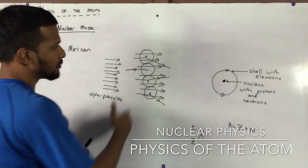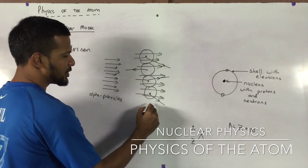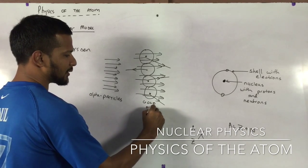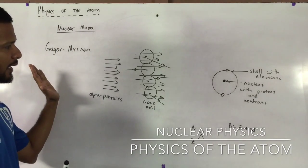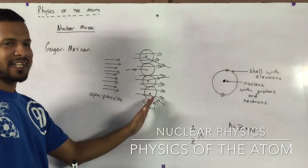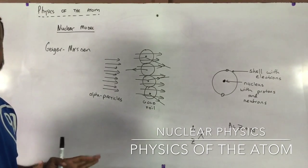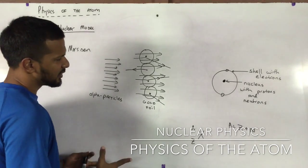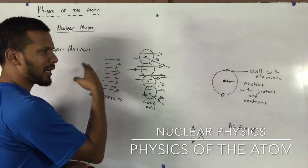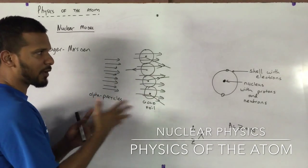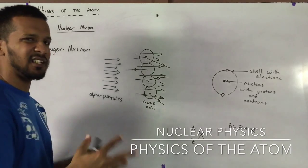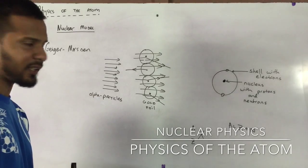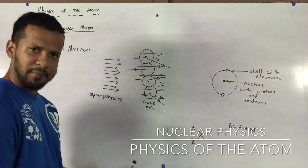What they did is they took gold foil and they shot the gold foil with alpha particles. So alpha particles were incident on a thin sheet of gold foil. And there were three main observations that they came up with. The observations were that these particles mainly passed straight through. That basically said that these atoms that make up the gold foil are made mainly of empty space.